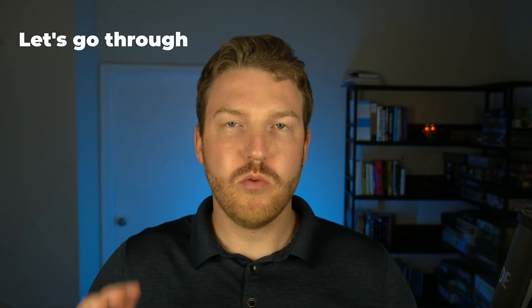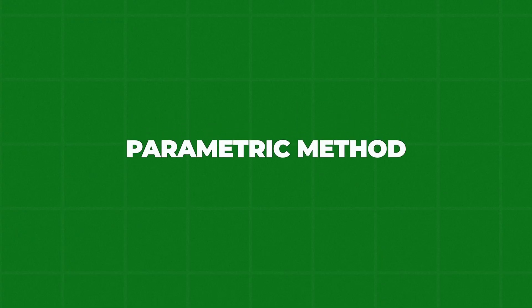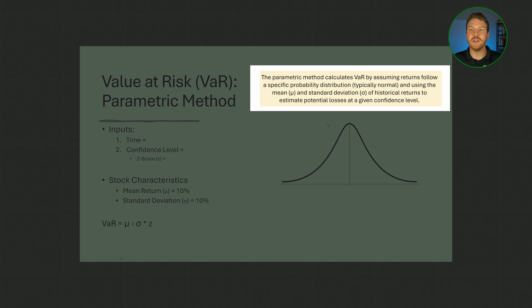Now let's go through the three main methods to calculate value at risk, starting with the parametric method. The parametric method calculates VaR by assuming that the returns follow a specific probability distribution, typically normal (or we could take into account skewness and kurtosis, but that's beyond the scope of this video) and using the mean and standard deviation of historical returns to estimate potential losses at a given confidence level.